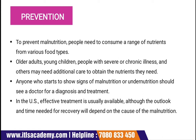Then comes the prevention. To prevent malnutrition, people need to consume a range of nutrients from various food types. Older adults, young children, people with severe chronic illness, and others may need additional care to obtain the nutrients they need. Anyone who starts to show signs of malnutrition or undernutrition should see a doctor for diagnosis and treatment.